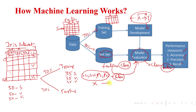We develop a mathematical function that maps the features — sepal length, sepal width, petal length, and petal width — to the corresponding class label. Based on this information our model is trained. This process is called model development.